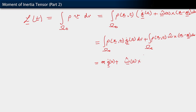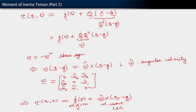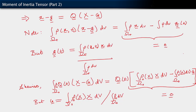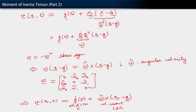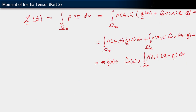We have ω̂(t) cross the integral over omega_t of ρ(x,t)·(x minus g) dV. But you remember the result we proved on the previous slide — two slides ago — stating that the integral of ρ·(x minus g) dV is zero. We invoke that here, and we see that this contribution goes to zero.